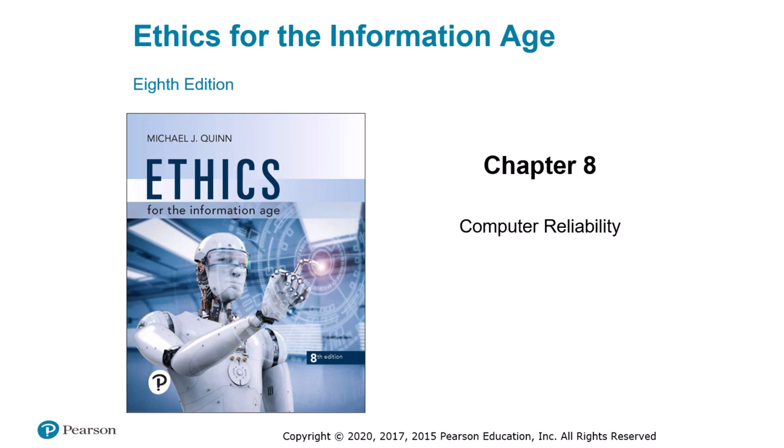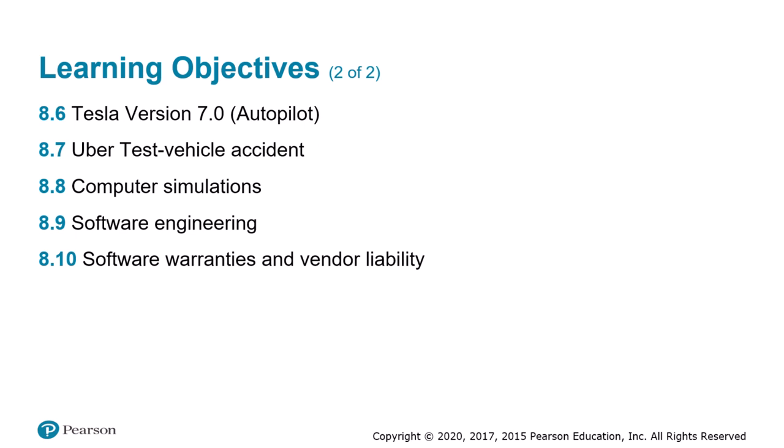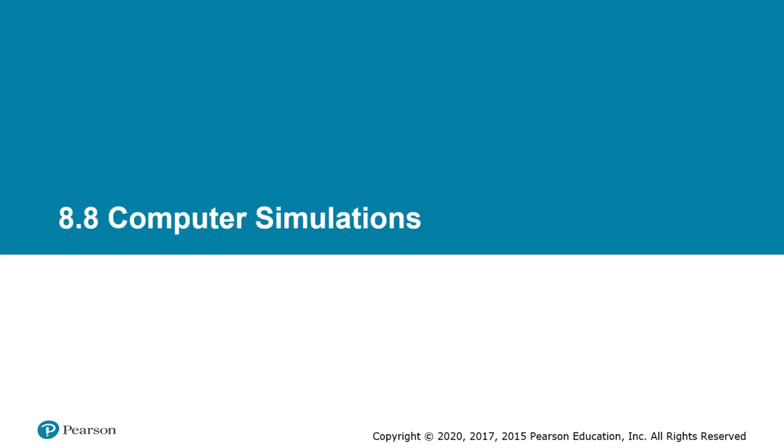In this lecture we're going to complete our exploration of chapter 8, which is titled Computer Reliability. We're going to start with section 8.8 and finish through sections 8.9 and 8.10. Section 8.8 is titled Computer Simulations, and in the previous three sections we explored accidents related to computerized systems in the areas of health care and transportation.